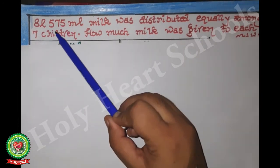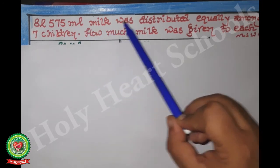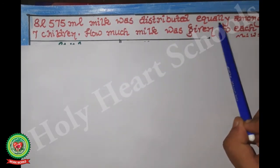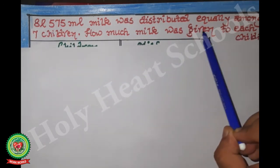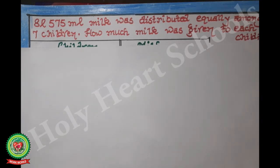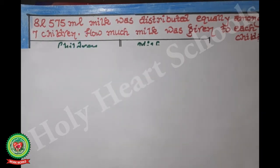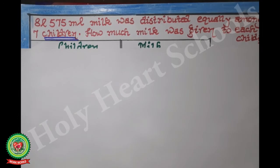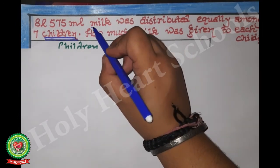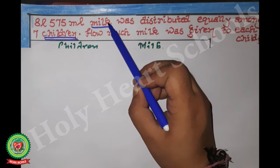8 liters 575 milliliters of milk was distributed equally among 7 children. How much milk was given to each child? Again, we see which two things are given: one is children and the second is milk. Children is given two times, so we will double underline children. Milk is given single time, so we will single underline milk.